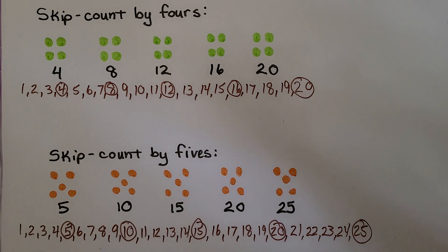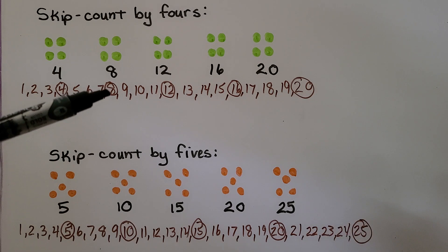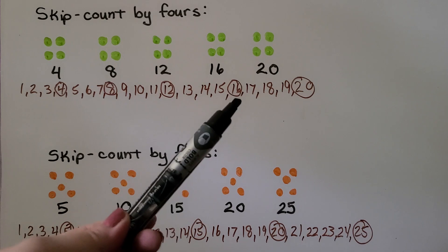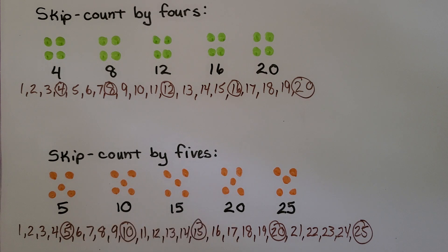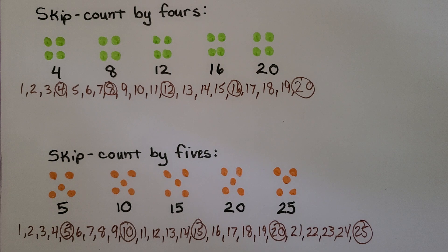When we skip count by fours, we count four, eight, twelve, sixteen, twenty — skipping to each multiple of four. When we skip count by fives, we count five, ten, fifteen, twenty, twenty-five — and we could keep going. It's much quicker than counting each one.